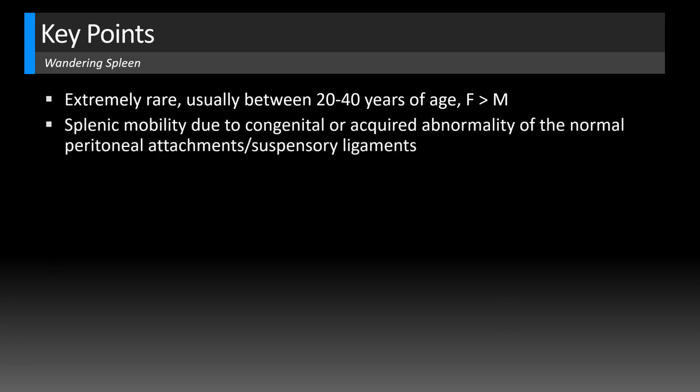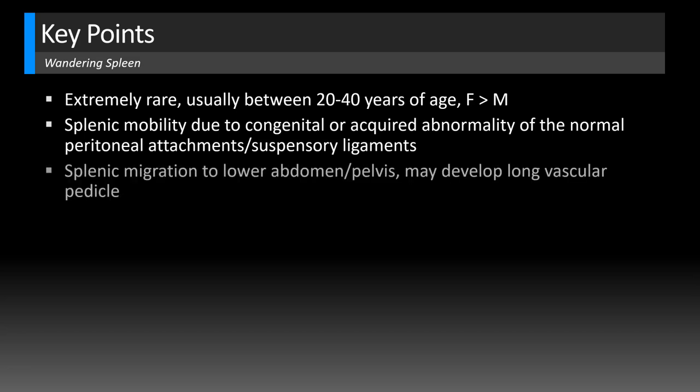What happens is you get splenic mobility due to a congenital or acquired abnormality of the normal peritoneal attachments and suspensory ligaments that fix the spleen in the left upper quadrant. It could be due to congenital absence of these ligaments or acquired laxity, which can sometimes occur in conditions like pregnancy. We see this more often in multiparous women, and also in diseases that cause splenomegaly.